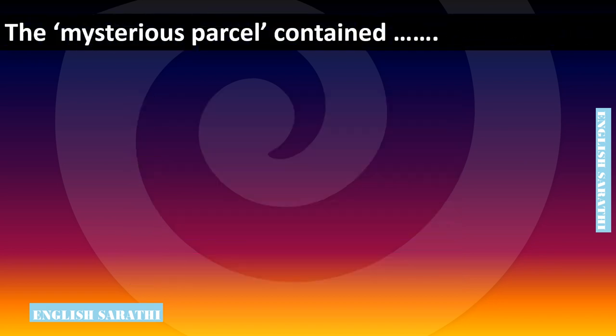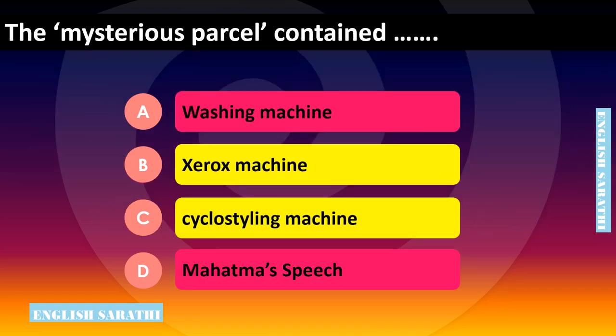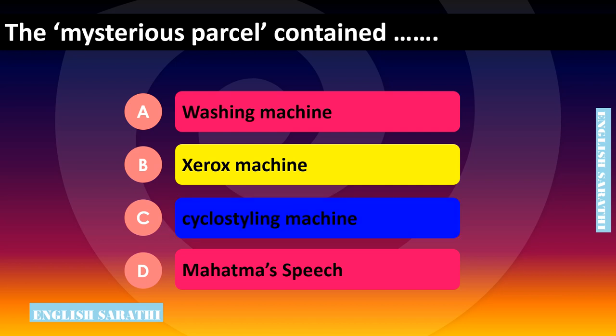The mysterious parcel contained dash. Options are: option A - washing machine, option B - xerox machine, option C - cyclostyling machine, option D - Mahatma's speech. The correct answer is option C - cyclostyling machine. The mysterious parcel contained a cyclostyling machine.